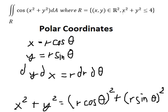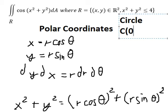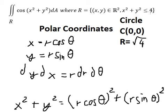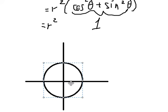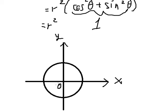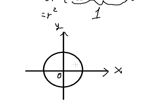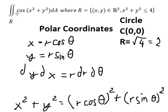Now we know that x squared plus y squared is less than or equal to 4. This is a circle at the center zero, zero with radius equal to the square root of 4, which is 2. We draw the diagram: center at (0, 0), radius 2, so we mark 2, negative 2 on each axis.